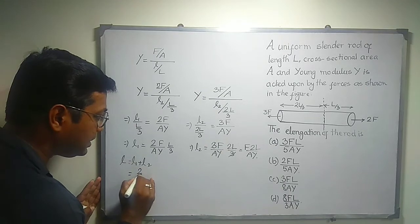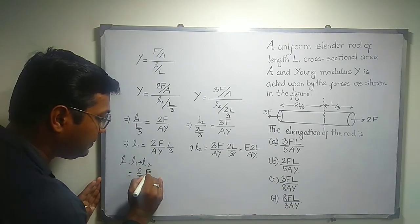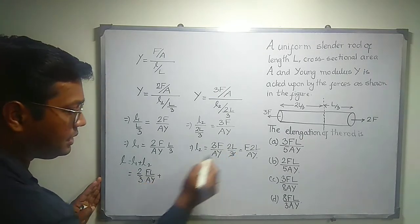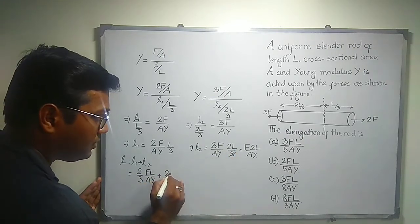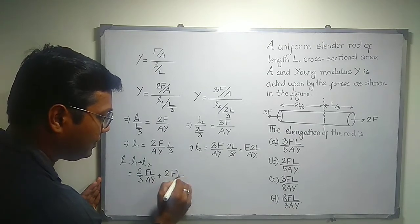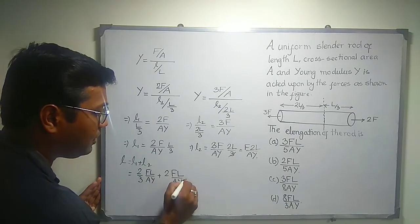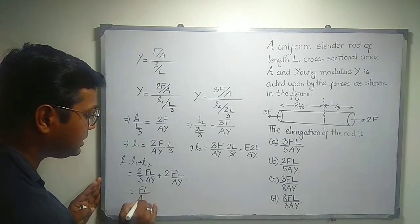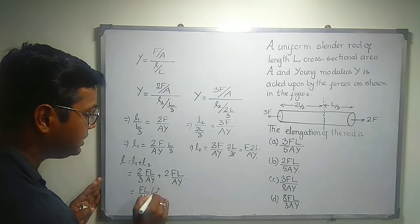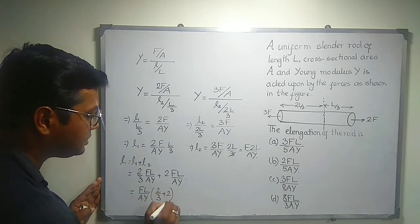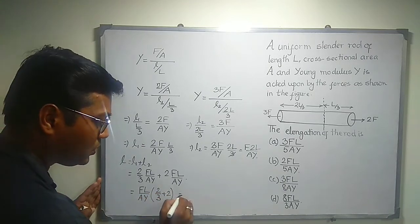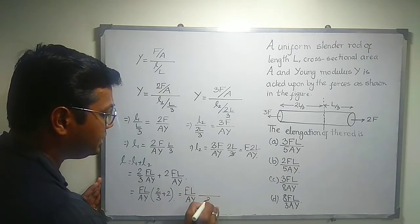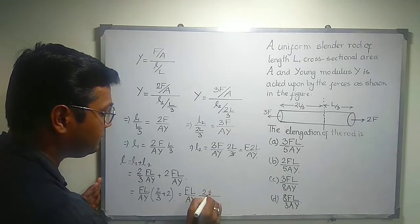What is L1? It is 2 divided by 3 FL divided by AY. And here it is 2 into FL divided by AY. I can take this FL divided by AY as common. So this will become 2 by 3 plus 2. So 3 is the LCM. 2 is here plus 6.